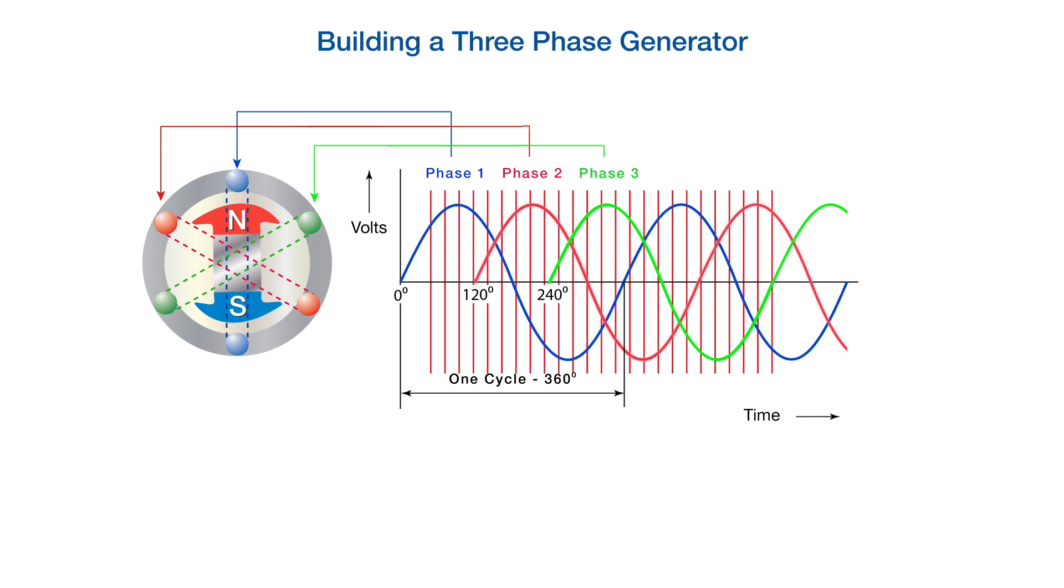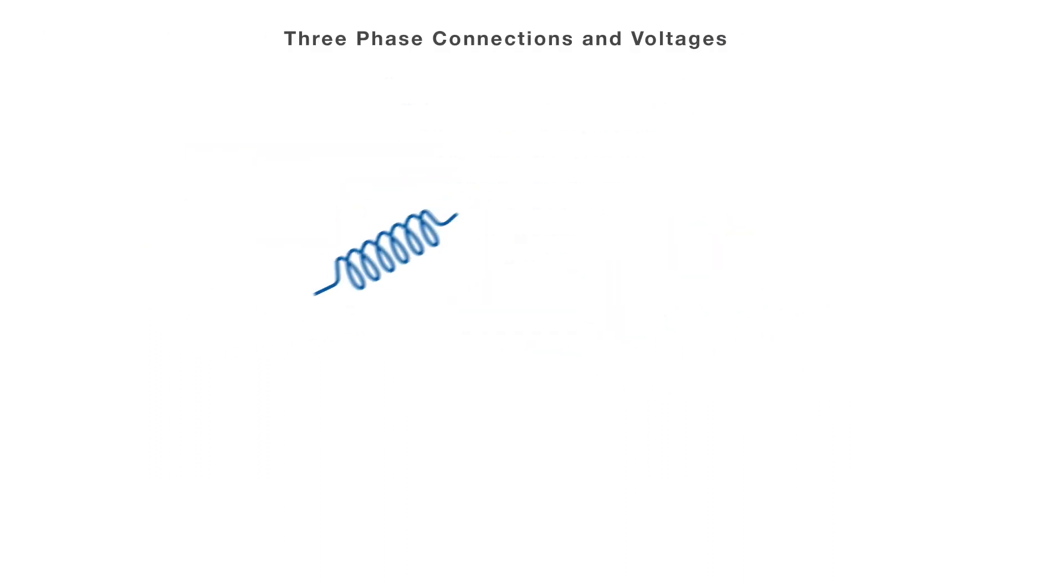Phase one, two, and three all peak positive and negative 120 degrees apart for a more efficient and powerful output than a single-phase coil would produce in the same-size stator. A three-phase brushless rotating field generator allows several voltage outputs depending on how the coil ends in the stator are connected.